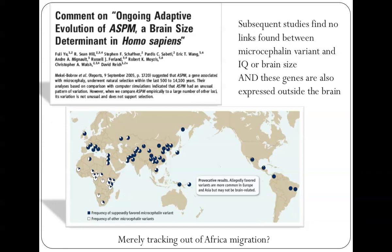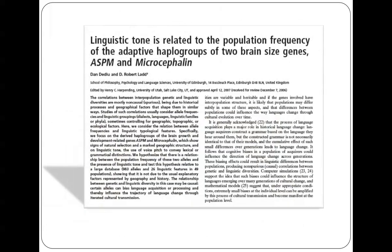The whole controversy died down, but it gives a feeling for how inflammatory and difficult this area of research can be, particularly if people make discoveries which get over-interpreted or don't align with what the public wants to hear. There was also a strange finding that these haplogroups correlated with the kinds of languages people speak — those with tonal languages like Chinese having a particular haplogroup — though whether this is purely spurious or has any meaning is yet to be determined.